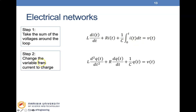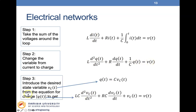Step two: change the variable from current to charge, replacing I with dQ/dt. This gives the equation in terms of charge Q. Step three: introduce the desired state variable Vc, using the relationship Q(t) = C·Vc(t). We substitute C·Vc(t) in place of Q in the equation, so that we have both Vc and V(t) present and can find the transfer function.